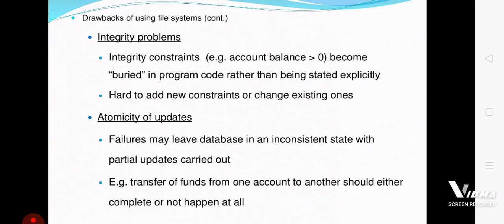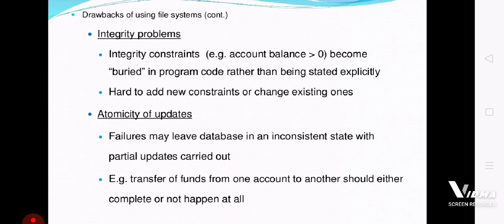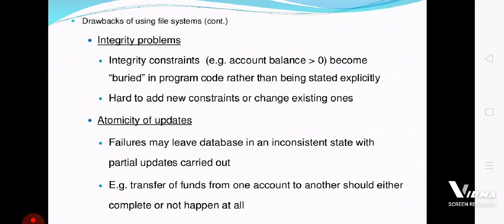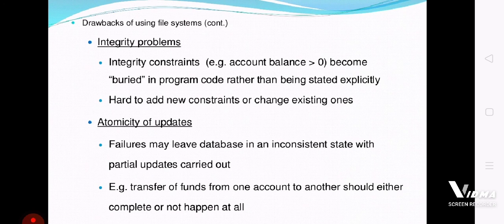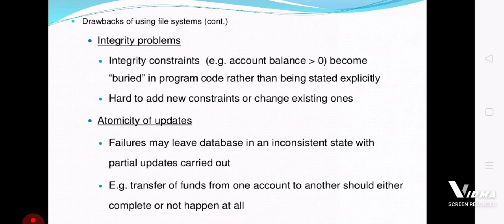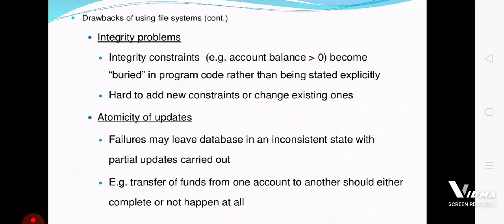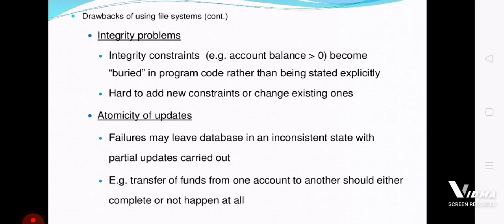As I told you in the last video, if A and B are joint account holders and both access the same account — A's transaction is applied but B's fails — this was the atomicity problem. Such problems are very difficult to handle in the conventional file processing system, but the database system has improved and overcome the atomicity of updates problem.